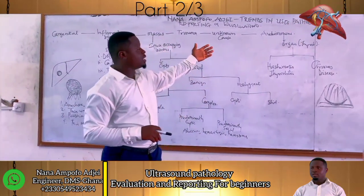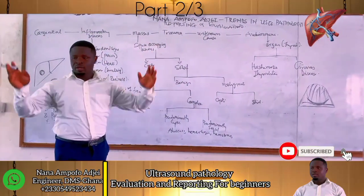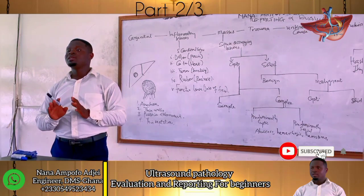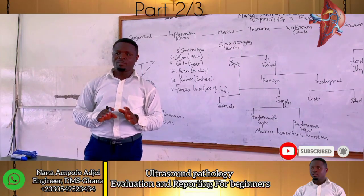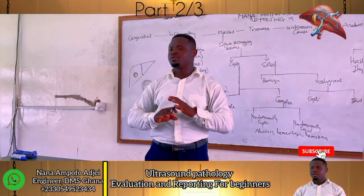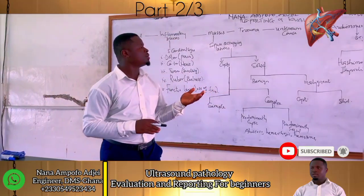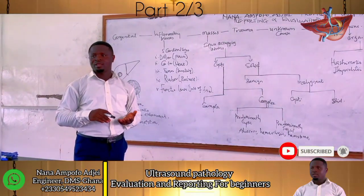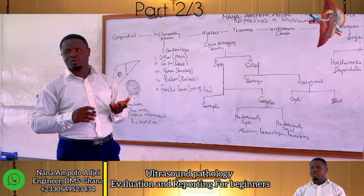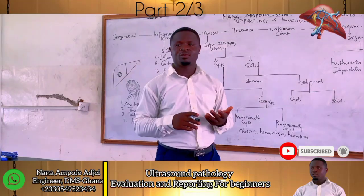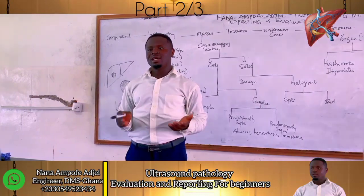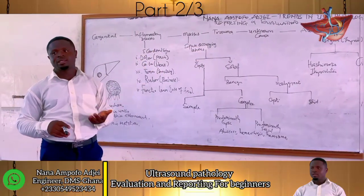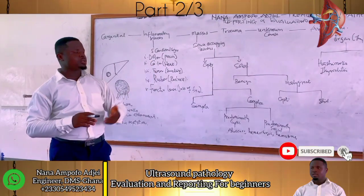We have diseases from unknown forces, and then we have autoimmune. Assuming we are all in the community where we have our security forces with us — anytime there is war, these soldiers, these security forces come and fight to keep us safe. But with autoimmune, our own soldiers are rather fighting against us. For example, Hashimoto's thyroiditis in the thyroid gland, and the same thing happens in Graves' disease.